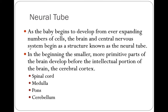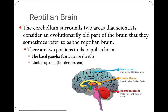As the baby begins to develop, the brain and central nervous system begin as a structure known as the neural tube. The smaller, more primitive parts of the brain develop before the intellectual portion — the cerebral cortex. The first things that develop are the spinal column and the primitive portions of the brain: the medulla, the pons, and the cerebellum. The cerebellum surrounds two areas scientists consider an evolutionarily old part of the brain, sometimes called the reptilian brain: the basal ganglia and the limbic system. Basal ganglia means basic nerve sheath, and limbic system means border system.